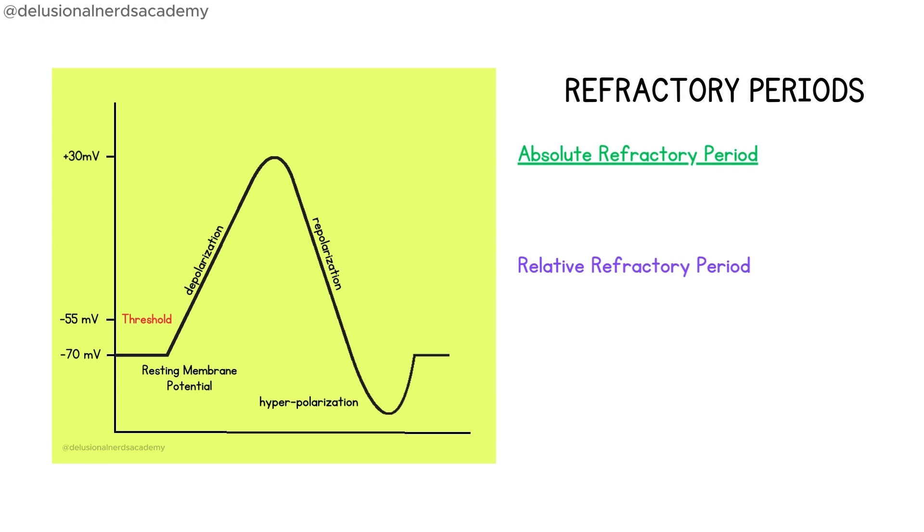The absolute refractory period occurs during repolarization. It is the period of time when a neuron cannot fire another action potential, no matter how strongly it is stimulated.